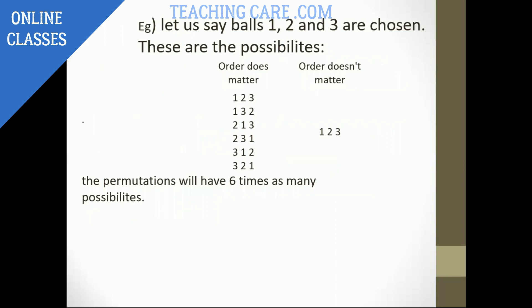Now, for example, I'm going to show you with permutation and combination. Let us say balls 1, 2, 3 are chosen. If order does matter, there are totally six possibilities. If order doesn't matter, there will be one possibility.